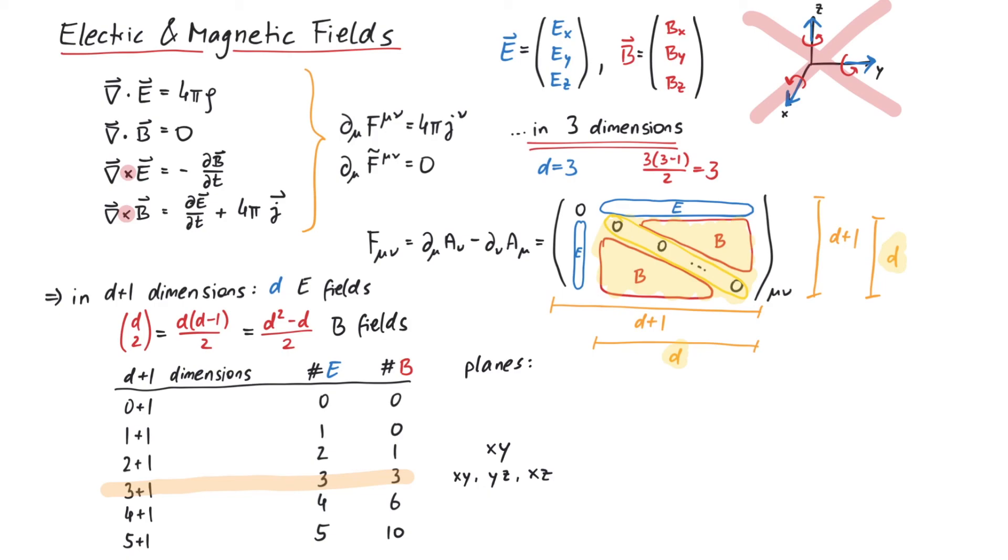And in one dimension, we do not have any plane at all. And in four dimensions, where we might have one additional axis called W, there are six planes, and therefore six components of the magnetic field.